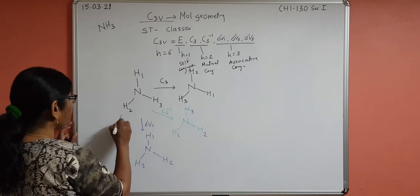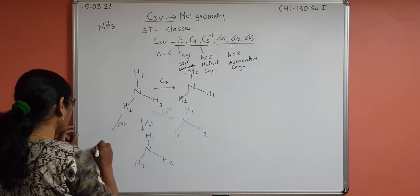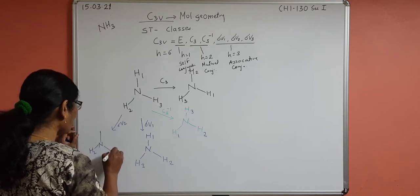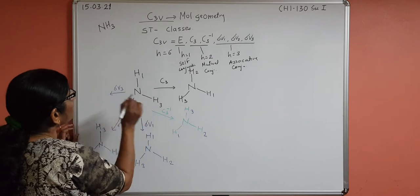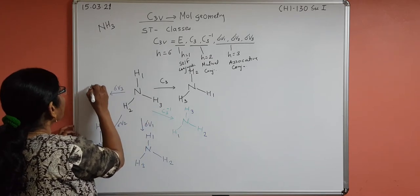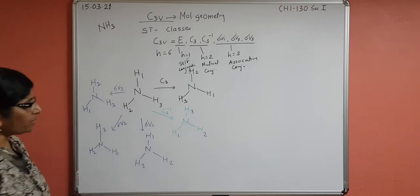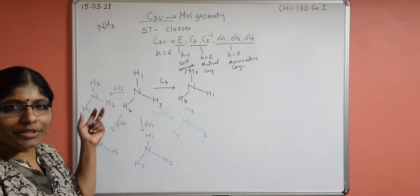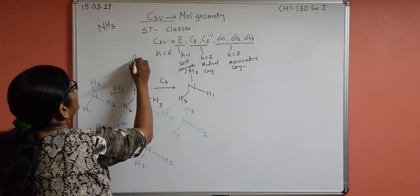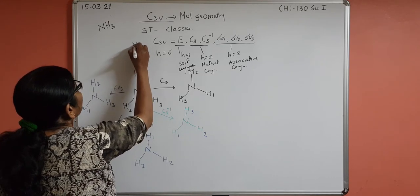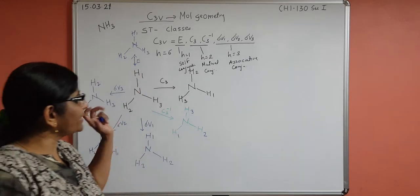For σV2, H2 and N remain in place while H1 and H3 exchange. For σV3, H3 and N remain in place, and H2 takes the place of H1 while H1 takes the place of H2. All six operations for the C3V point group are now drawn centrally, including identity where everything remains as H1, H2, H3.